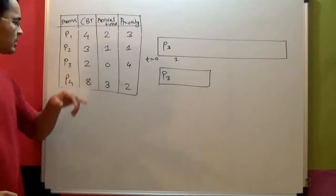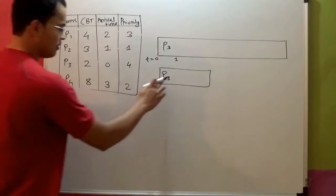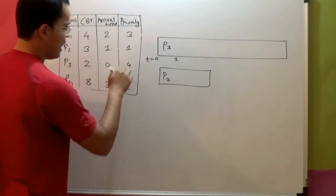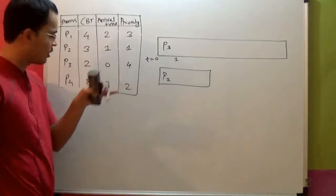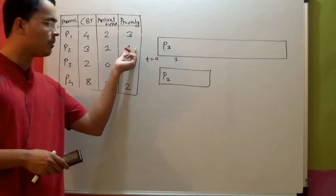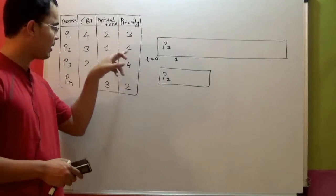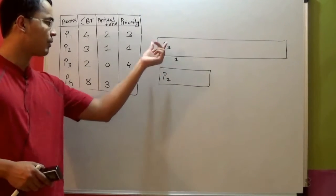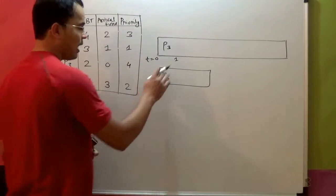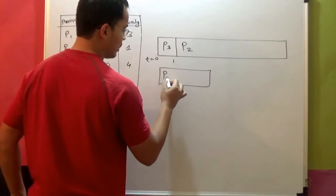At time equal to 1 second, a new process is arriving, which is P2. Now priority of P2 is 1 and priority of P3 which is currently executing is 4. As I said earlier, according to convention, lower the number, higher the priority. So priority of P2 at number 1 is greater than priority of P3. So we will preempt P3 and put P2 in the CPU. So at time equal to 1 second, P2 goes in, P3 goes out into the queue.